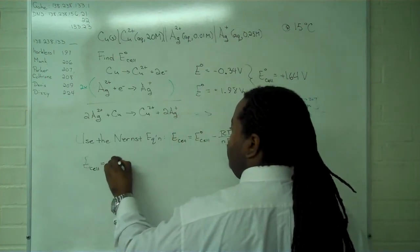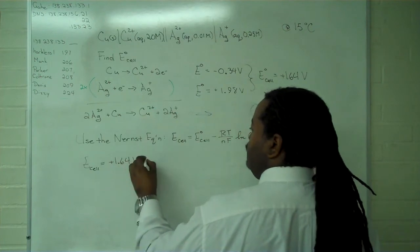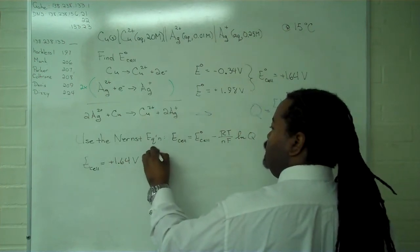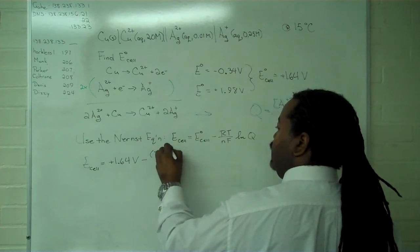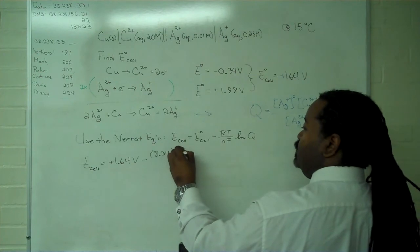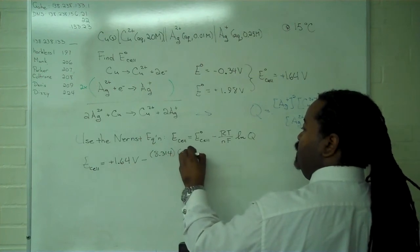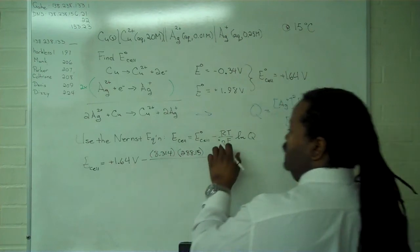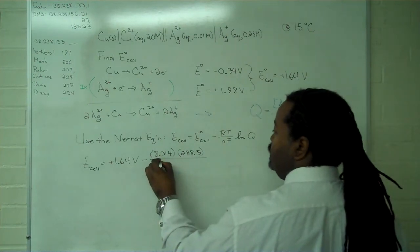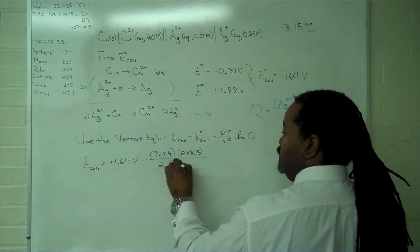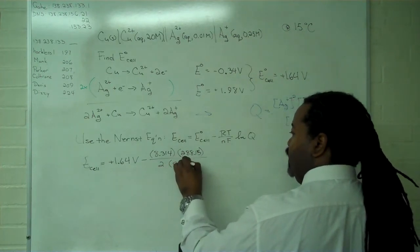So the E-cell will be equal to plus 1.64 volts minus R is 8.314. And I am suppressing the units just for simplicity of writing. Temperature in Kelvin, 288.15. The number of electrons was 2, and Faraday's constant, 9.6485.